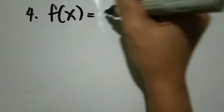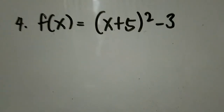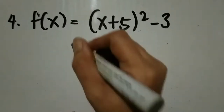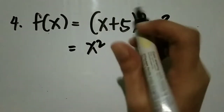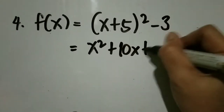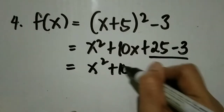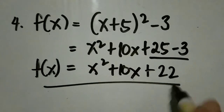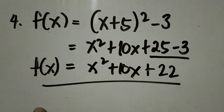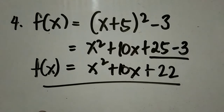Let's have number 4. Ang given natin ay f(x) = (x + 5)² - 3. Ito yung ating vertex form. I-transform natin siya into quadratic function. Square the first term: x². Multiply the two terms times 2: 5x times 2 equals 10x. Square the last term: 25. Minus 3. Combine similar terms: x² + 10x, then 25 minus 3 is 22. So the quadratic function is f(x) = x² + 10x + 22.